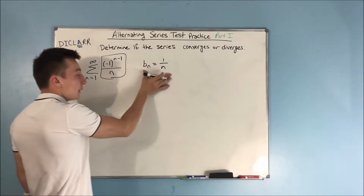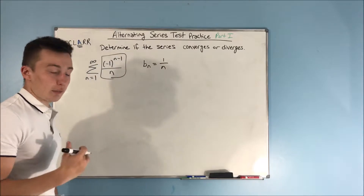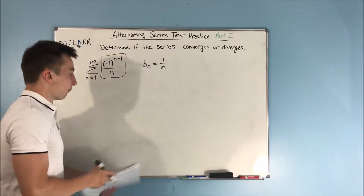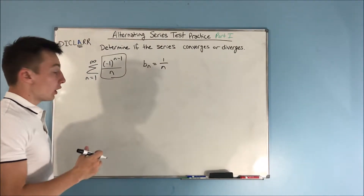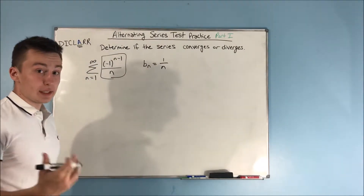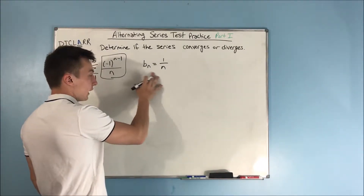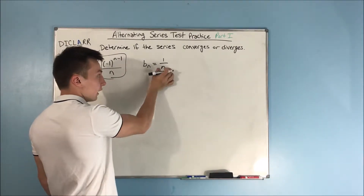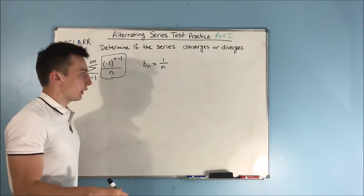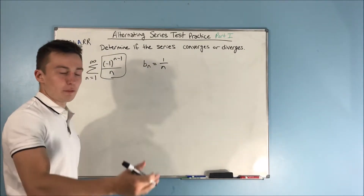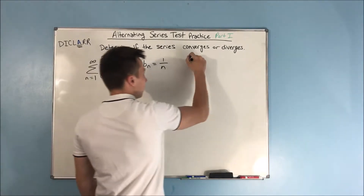Now that we have B sub n — this is a new little series we're creating — we need to determine if this is decreasing. Is this decreasing as n increases? Yes, of course it is. You're going to get one half, one third, one fourth, one fifth — so it is decreasing.